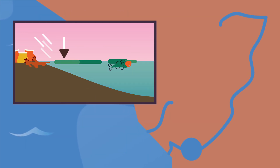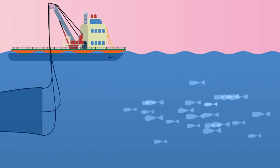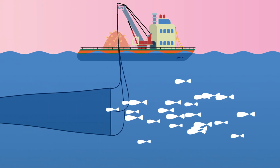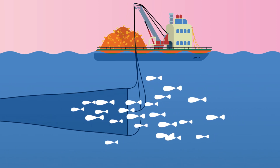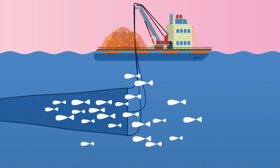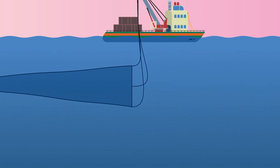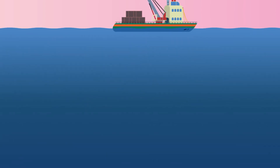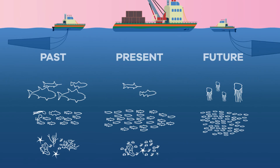If fertilizers are washed into streams, rivers, and lakes, they can cause eutrophication, which leads to the death of aquatic organisms. Not only are humans over-exploiting the land, but we also have a negative impact on the sea. In some countries, fish are caught by very large boats called trawlers that take tons of fish out of the sea every day. The fish is processed and packaged on the boat ready for sale, and these ships can stay at sea for weeks at a time.